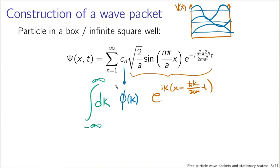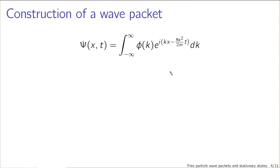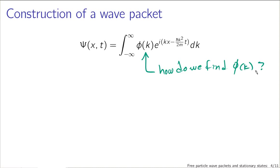We have an integral, we have this continuous function φ(k), and we have our traveling wave states. The main problem with this expression is: how do we find φ(k)? φ(k) is a general function. What we had done to find the analog — the c_n in the case of the particle in a box — was use Fourier's trick to collapse the sum. Instead of a sum now we have an integral, and it's not immediately clear what it means for an integral to collapse. We'll see what that means in a second.